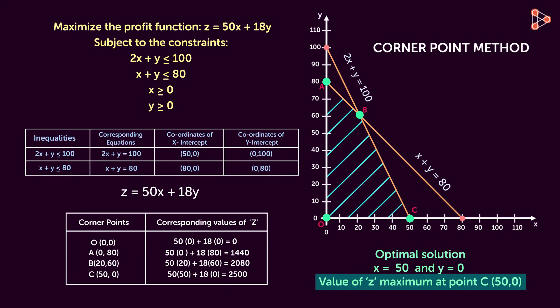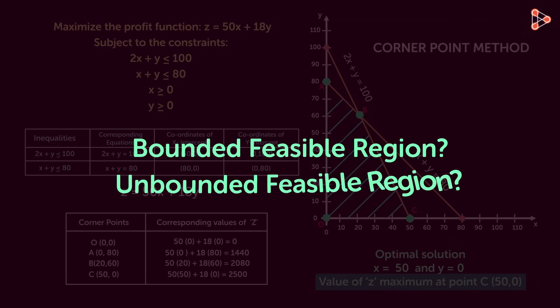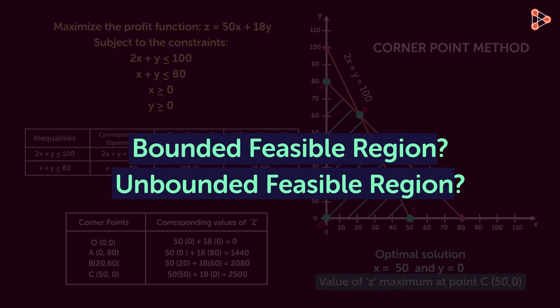This is how we solve a linear programming problem graphically. Let me ask you a question here: is the feasible region of this problem bounded or unbounded? To answer this question, we first need to discuss the meaning of bounded region and unbounded region, and why we chose only the corner points, and how we found the feasible region. We will continue the discussion in our next lesson.